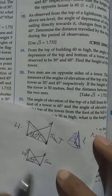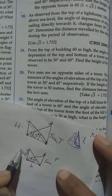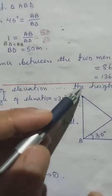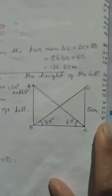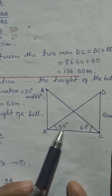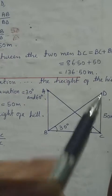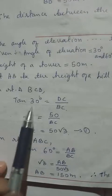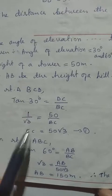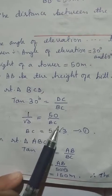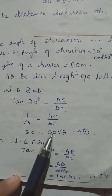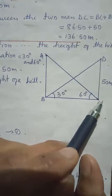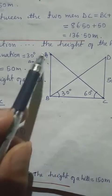We take the hill height as AB — perpendicular — and BC as the base. We can apply tan. Drawing it properly: consider AB as the height of the hill. For the first triangle DCB with angle 30°, we use tan 30° = DC/BC. DC is given as 50m. From the table, tan 30° = 1/√3. Cross multiplying: BC = 50√3.